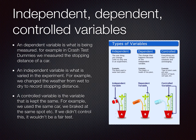An independent variable is what we changed during the experiment. For example, in the crash test dummies, we changed the road surface from wet to dry — or in this case we call it the weather — to record the stopping distance. In the plant picture, they changed the types of liquid given to the plant: some got Coke, others got water, and some got orange juice. And they measured the growth of the plant.